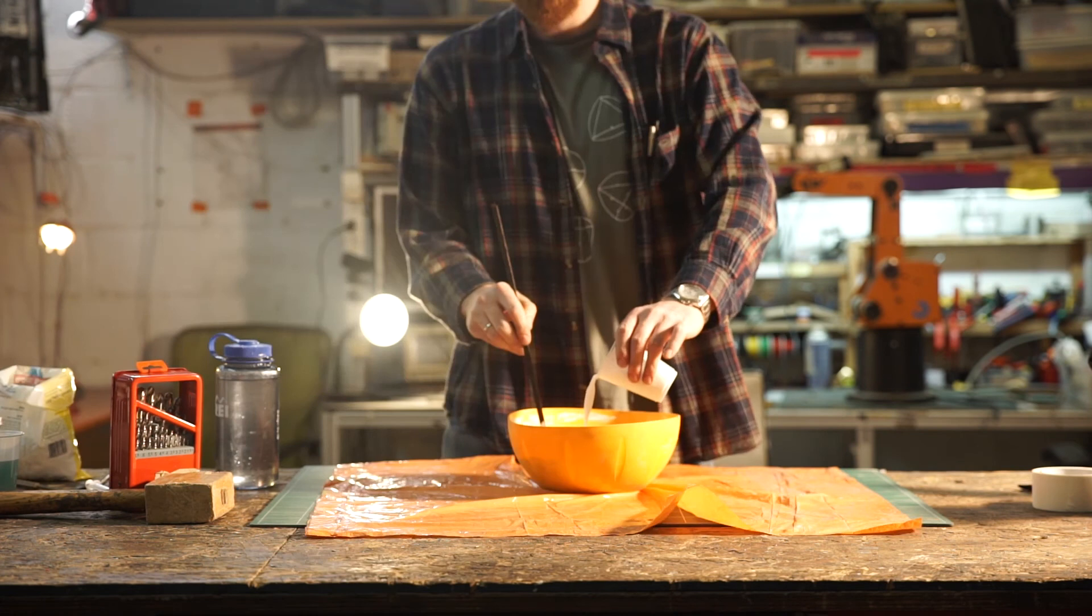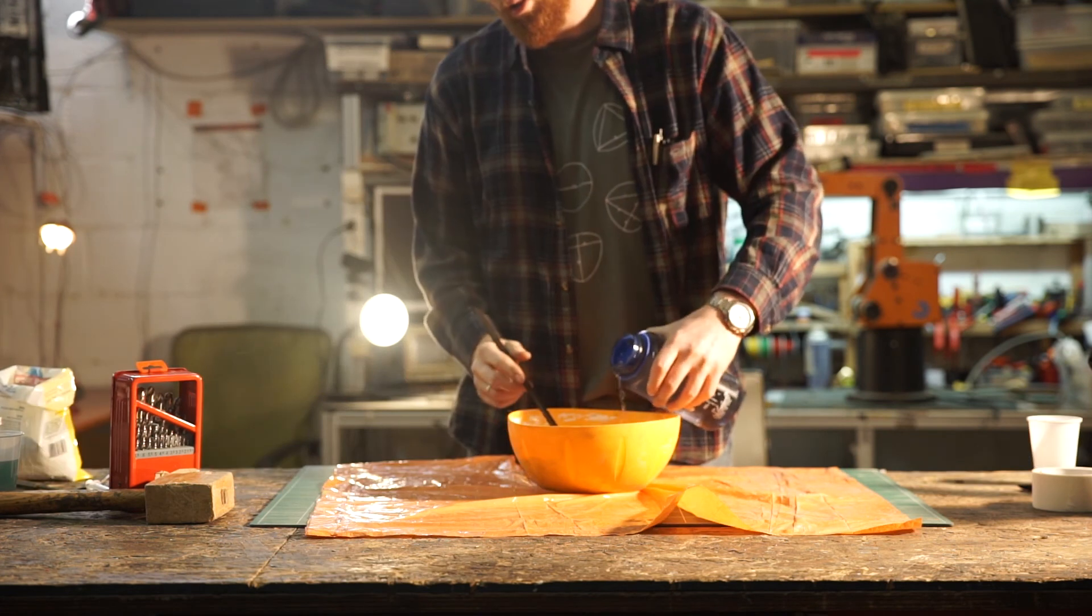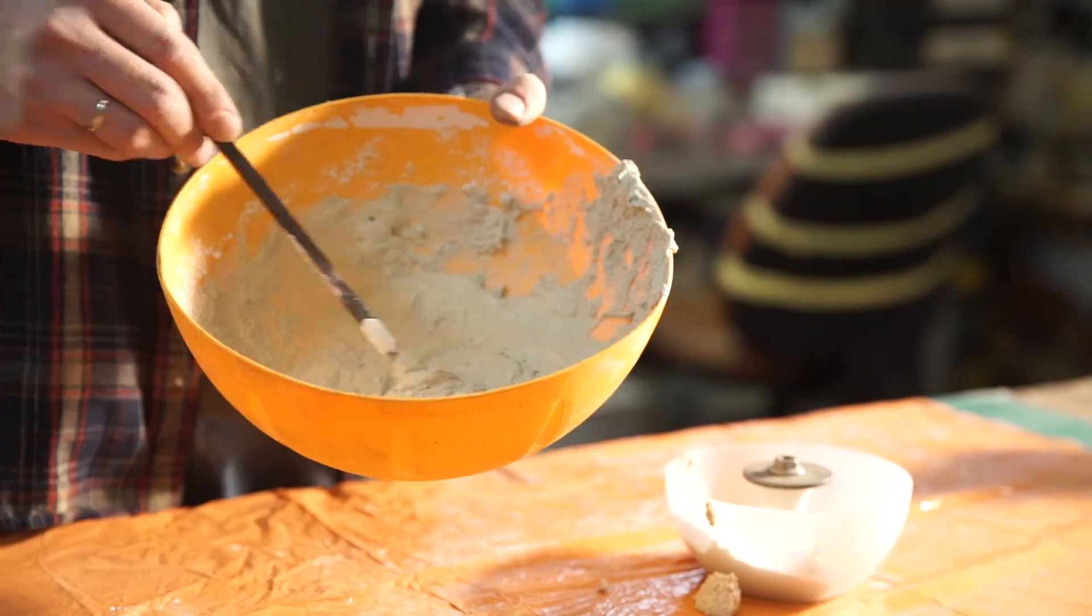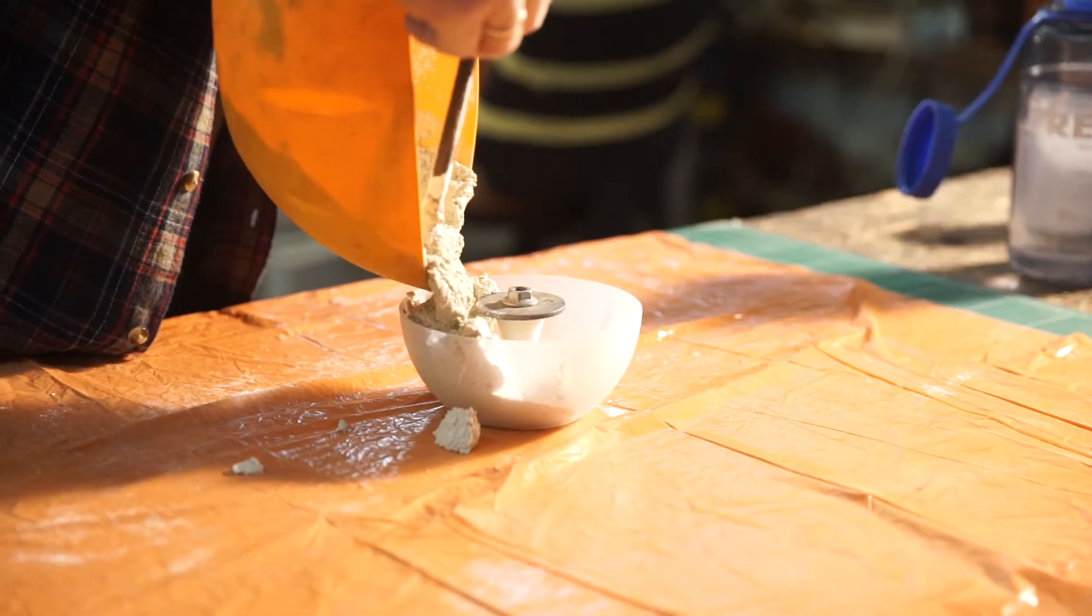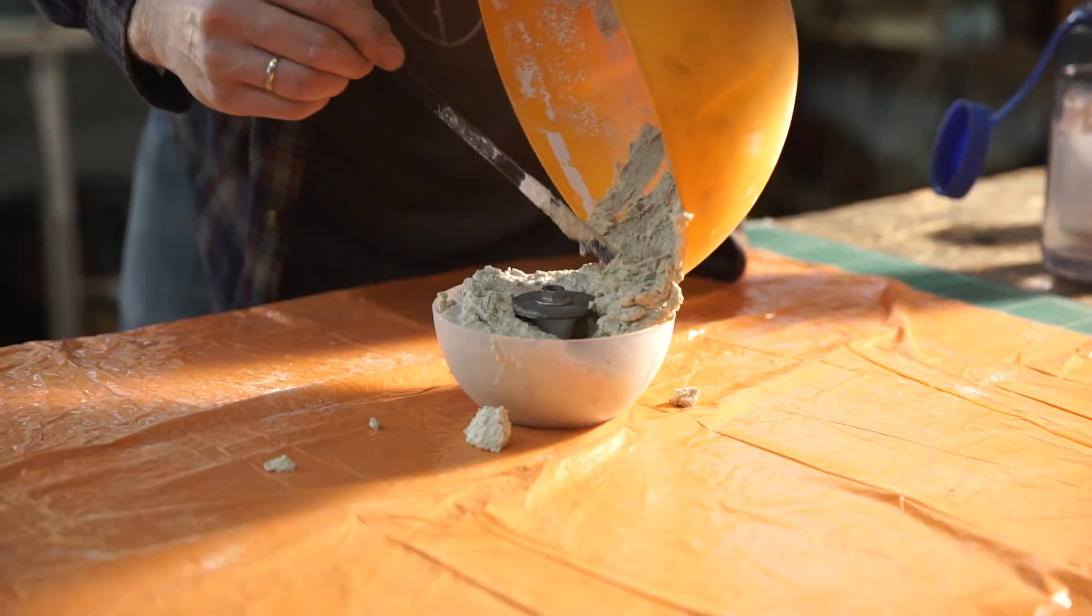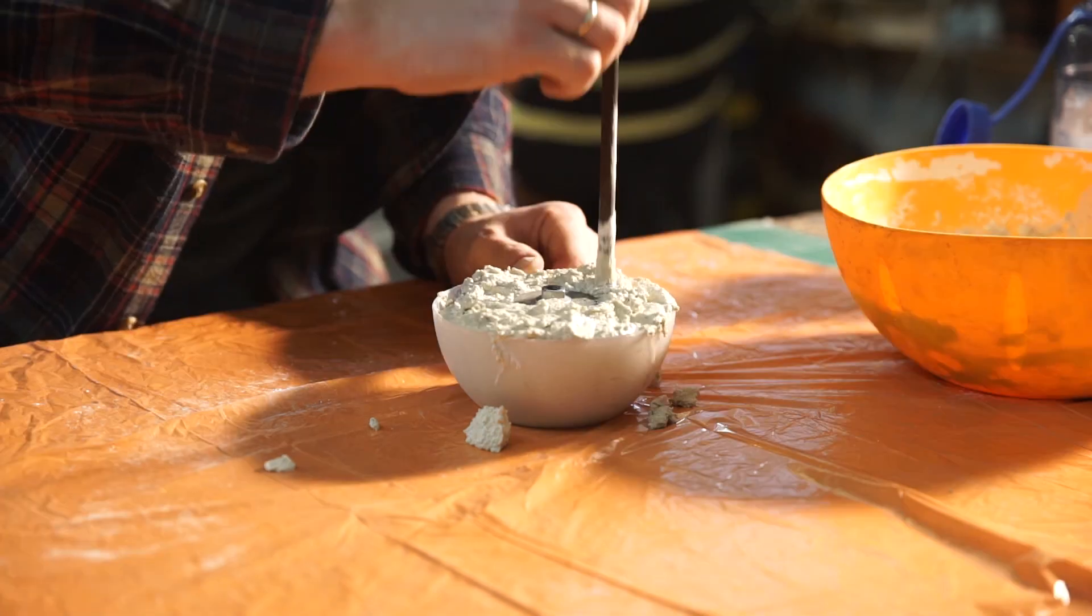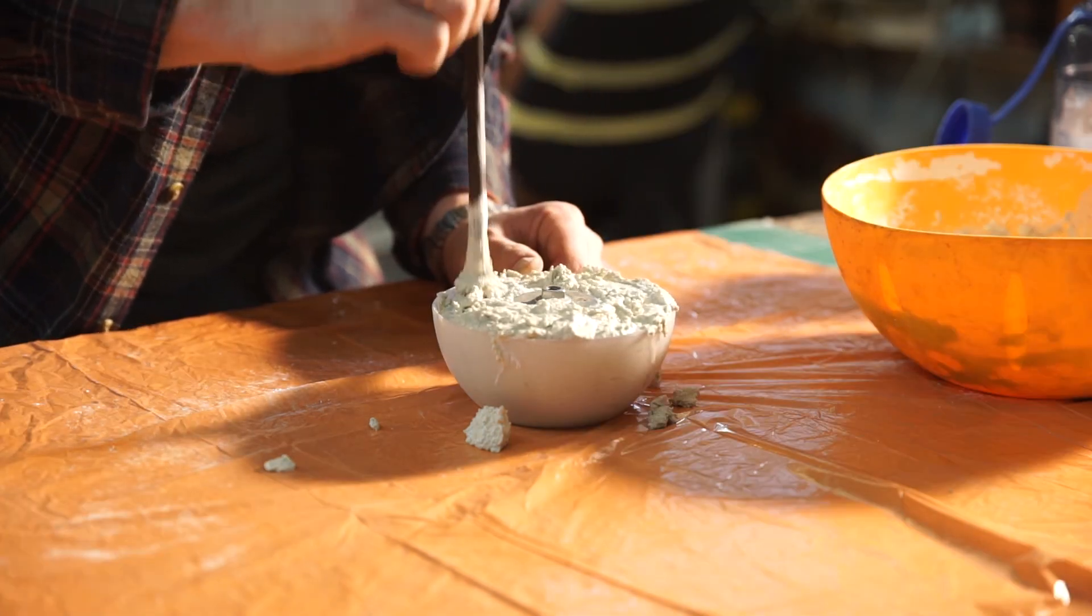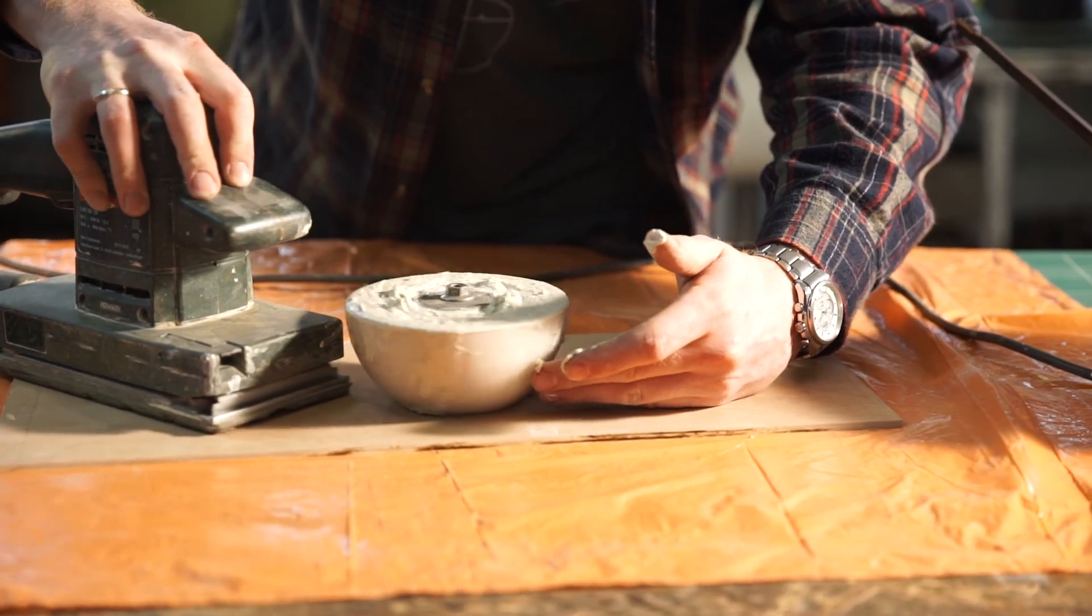I mixed the dry ingredients thoroughly and added the glue and some water until I got to the consistency of gluten-free oatmeal. I carefully filled the mold using a stirring stick to push the concrete into every nook and cranny. I then used the power sander to vibrate out any air bubbles.